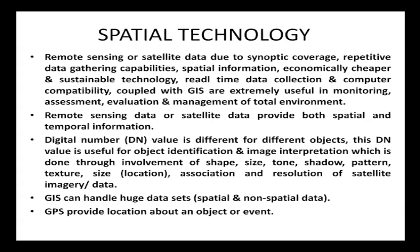Special technology — remote sensing or satellite data — because of synoptic coverage, repetitive data gathering capabilities, spatial information, economically cheaper and sustainable technology, real-time data collection, and computer compatibility coupled with GIS, are extremely useful in monitoring, assessment, evaluation, and management of the total environment and natural resource management. Remote sensing data or satellite data provides both spatial and temporal information. Data in GIS is of two types: spatial and non-spatial. A digital number is different for different objects, and because of that, a particular object is identified on Earth's surface using satellite data. GPS provides location information about an object.